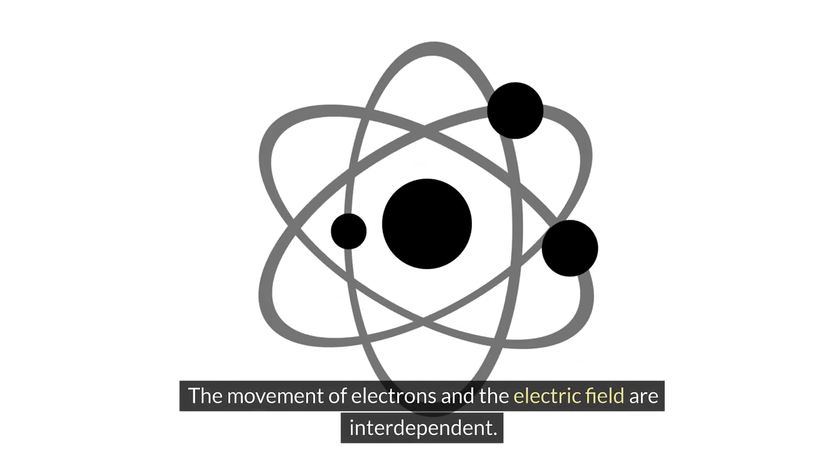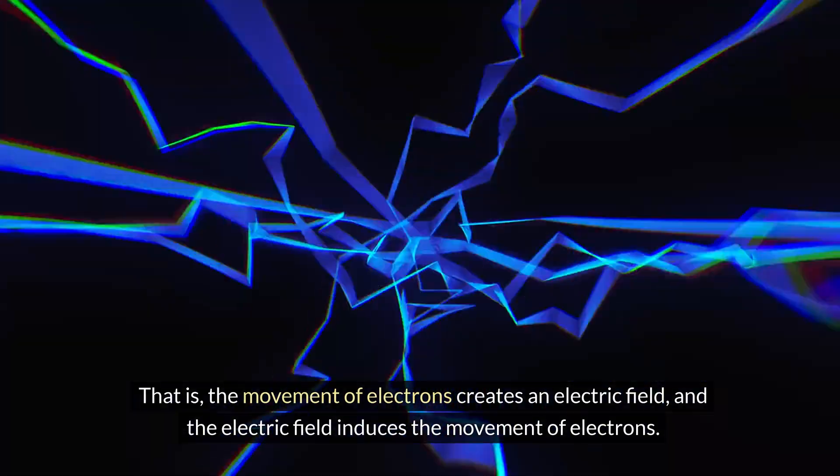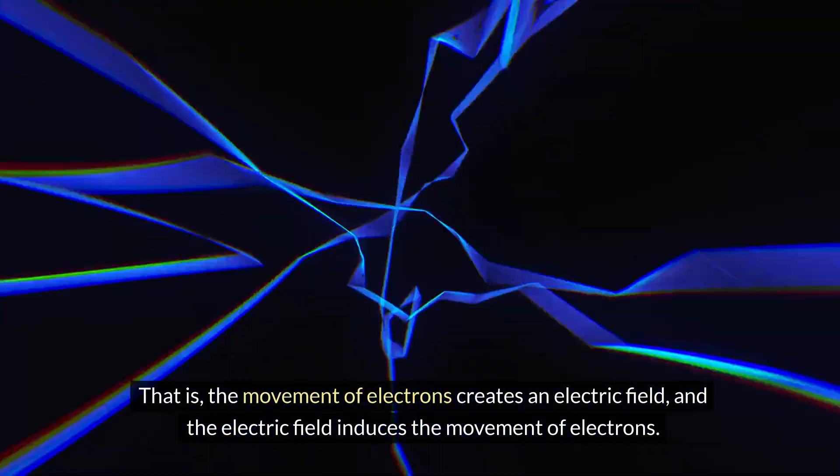The movement of electrons and the electric field are interdependent. That is, the movement of electrons creates an electric field, and the electric field induces the movement of electrons.